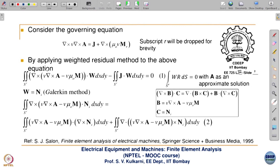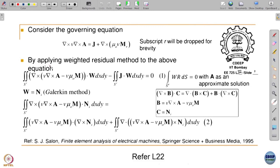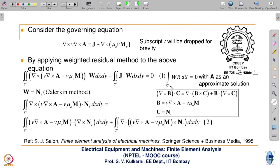Now we will apply the weighted residual method to the above formulation. In the weighted residual method, we integrate the weight into the residue over the domain and equate it to zero. There is a residue because we generally substitute an approximate solution, and we minimize the residue in a weighted integral sense.